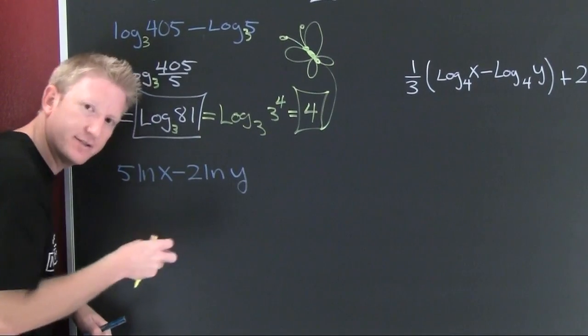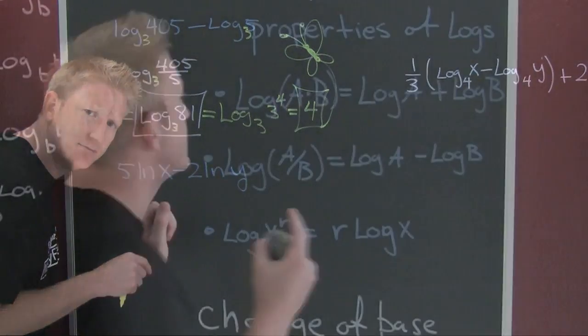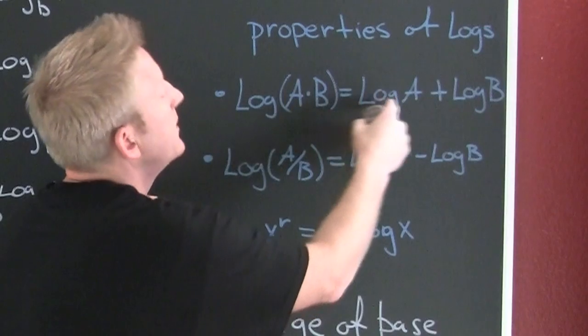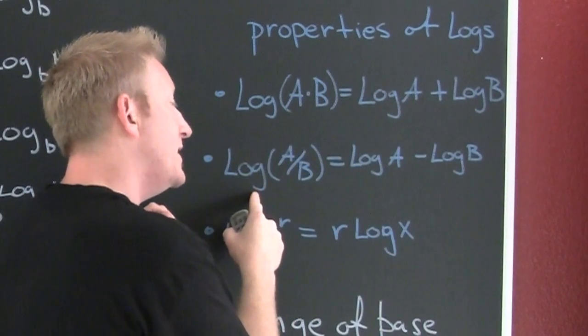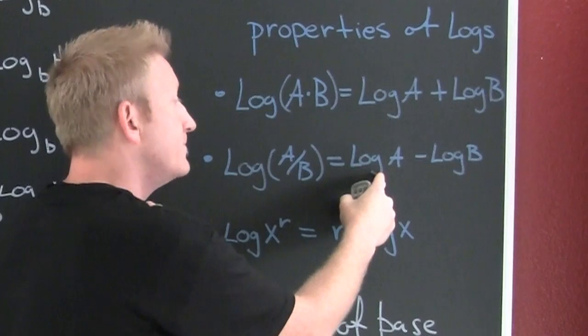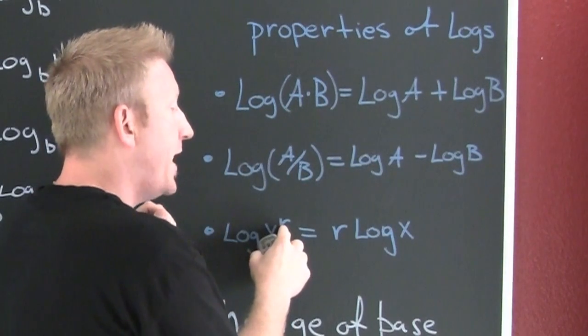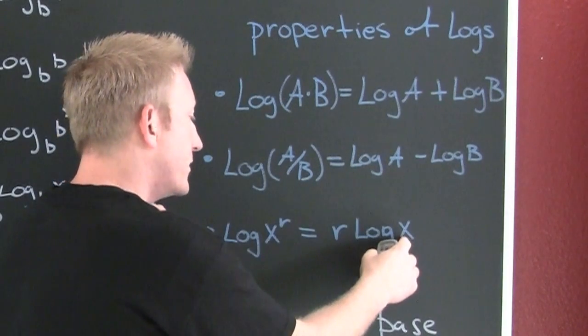Down here. I see I have the difference of logs. But if we flash back to those logarithm properties, some properties of logarithms. The log of a product is the sum of the logs. The log of a quotient is the difference of the logs. And log of the argument to the r power is r times the log of the argument.